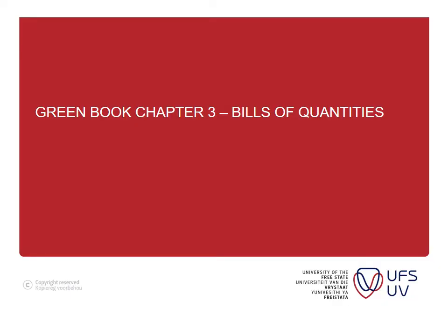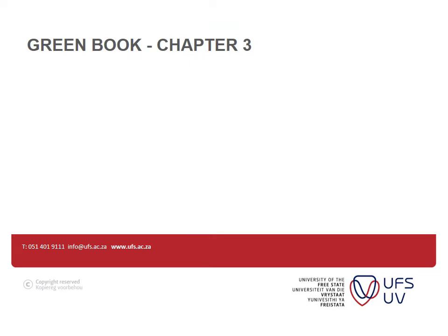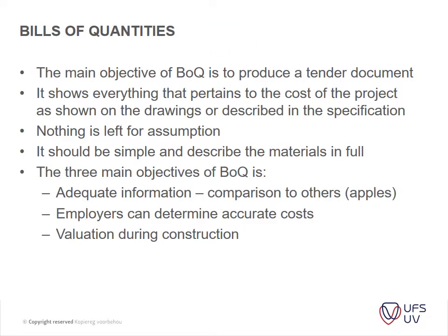Chapter 3 is all about bills of quantities and it starts on page 13 of your green book. It starts with the explanation of what bills of quantities are — I've touched on that already in the past. The main objective of the bills of quantities is to produce a tender document. You will hear that I use 'bills' in plural — bills of quantities — because a tender document comprises a whole lot of different bills in different sections in the different trades.